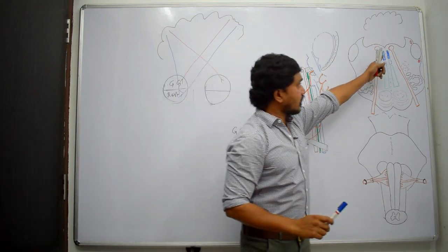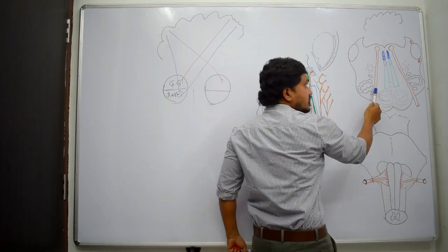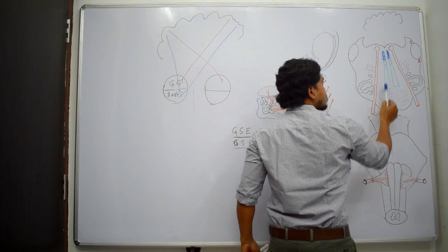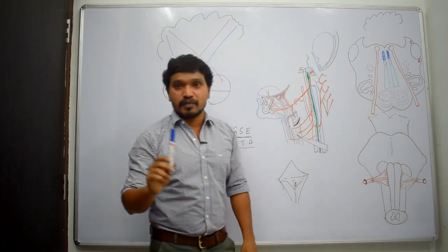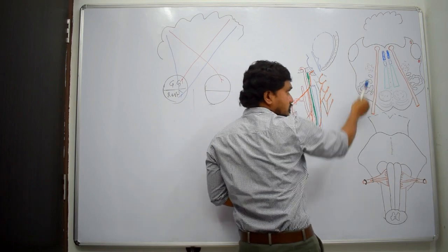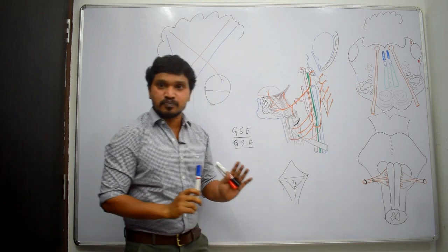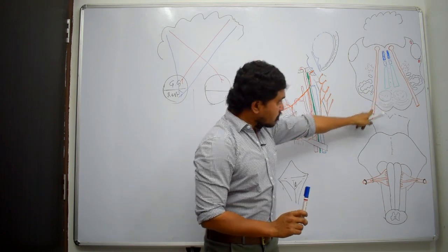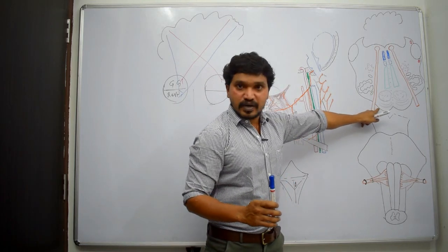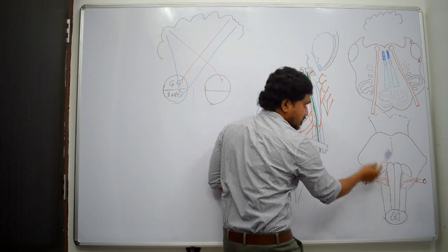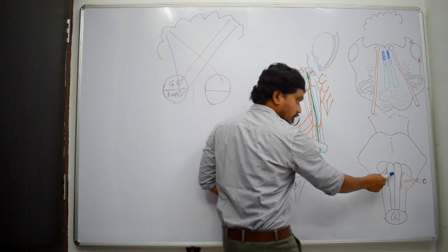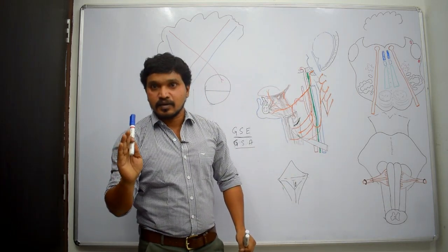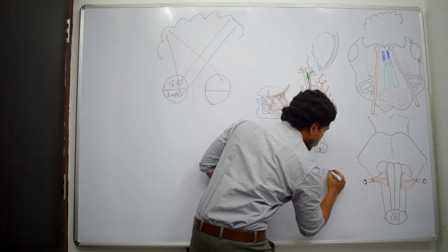The structures present lateral to this nerve are the reticular formation and olivary nucleus. After passing in between the olive and pyramid, it comes out at the anterolateral sulcus. This nerve attaches to the brainstem at the junction of the pyramid and olive — specifically at the anterolateral sulcus — by 10 to 15 rootlets.